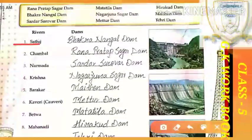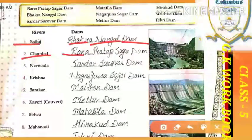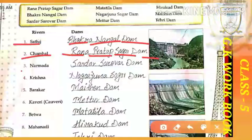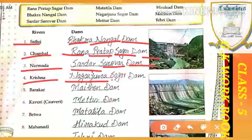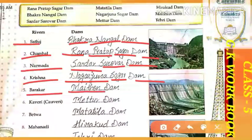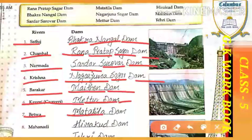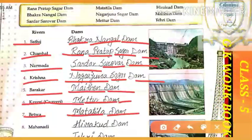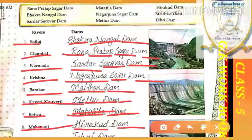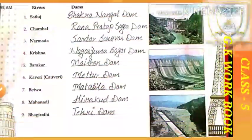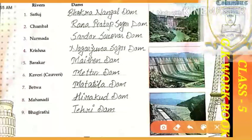Let's review everything at once: Satluj — Bhakra Nangal Dam. Chambal — Rana Pratap Sagar Dam. Narmada — Sardar Sarovar Dam. Krishna — Nagarjun Sagar Dam. Barakar — Maithon Dam. Kaveri — Maithon Dam. Betwa — Matatila Dam. Mahanadi — Hirakud Dam.